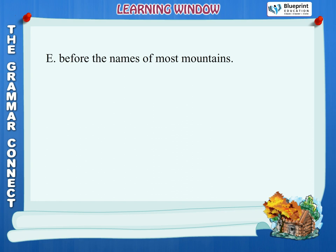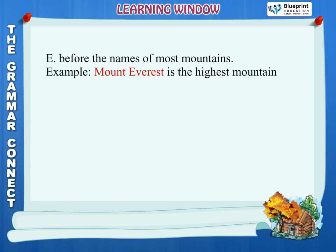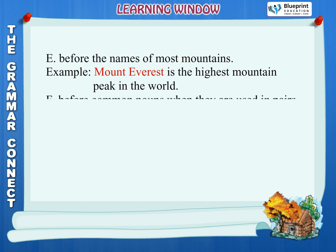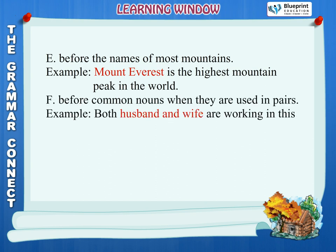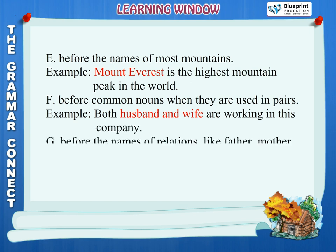Rule E: Before the names of most mountains. Example: Mount Everest is the highest mountain peak in the world. Rule F: Before common nouns when they are used in pairs. Example: Both husband and wife are working in this company.